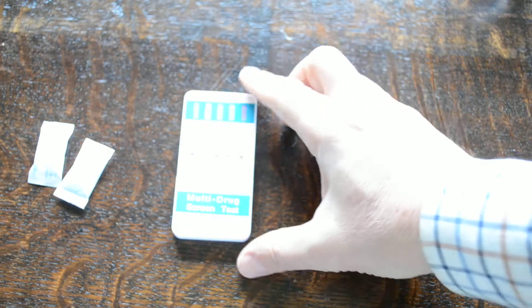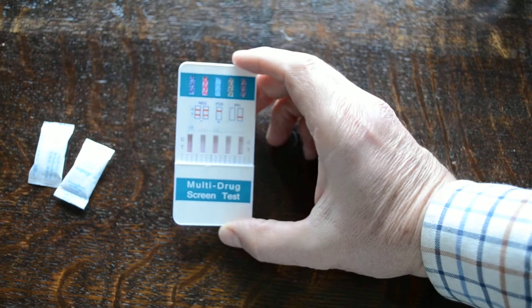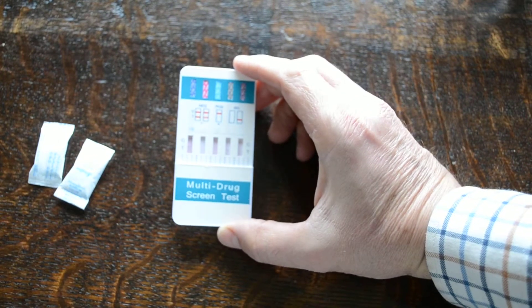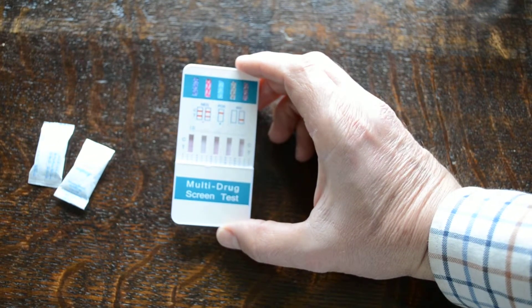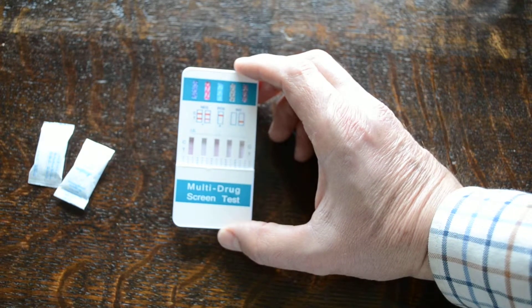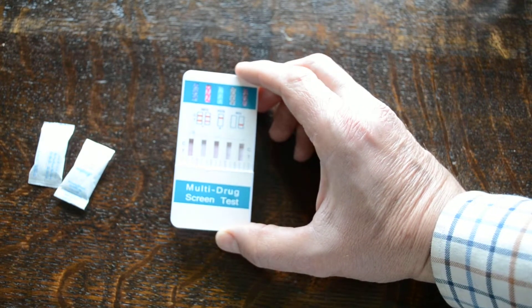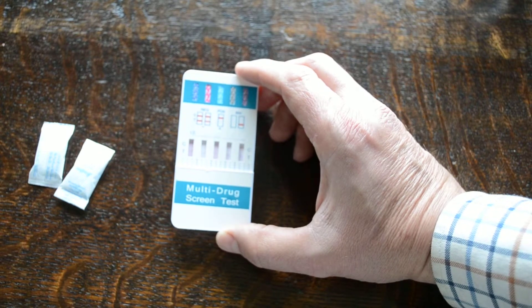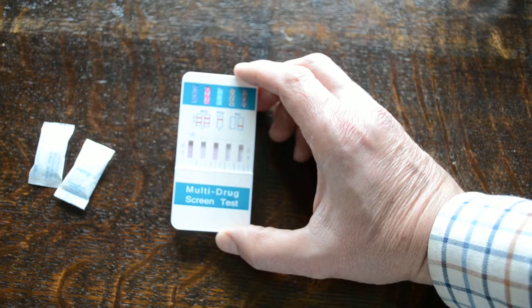Now this is a standard format for drug screening whereby you're basically looking for a control line to form on every test membrane to confirm that sufficient sample's been added and absorbed by that membrane. Then you're looking for the presence or absence of a test line to indicate the presence or absence of the drug.